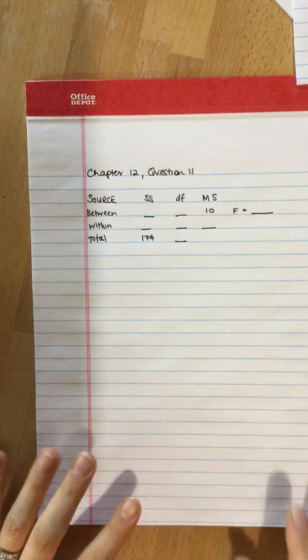The following summary table presents the results from an ANOVA comparing four treatment conditions with n equals 10 participants in each condition. Complete all of the missing values. Hint, start with the degrees of freedom column.